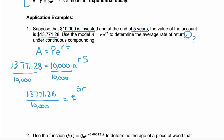Now we have that exponent isolated. To get rid of an exponent, you can use logarithms. So we can take the log of each side, and because we have the irrational number e, we want to use the natural log. We're going to take the natural log of both sides. When you take the natural log of something with base e, you're left with just that exponent. So our left-hand side will be the natural log of that fraction.